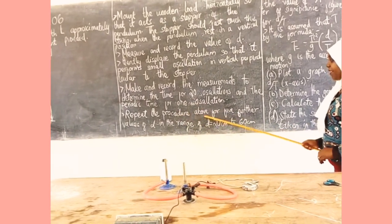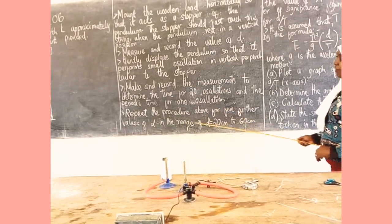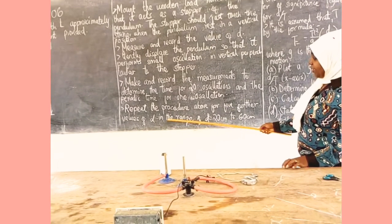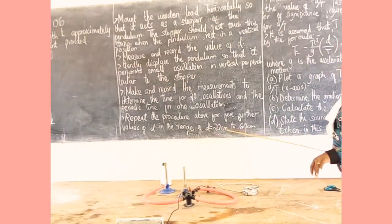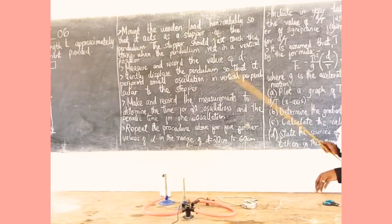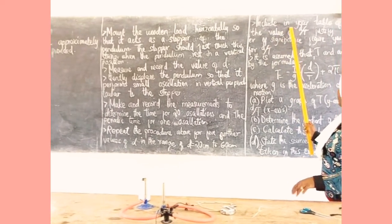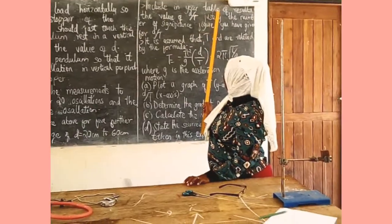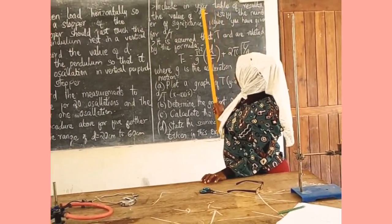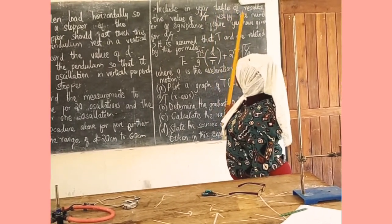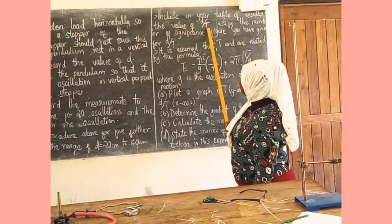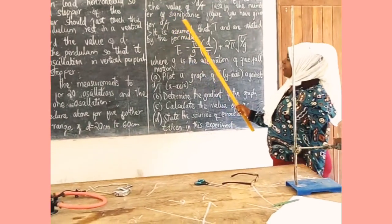Repeat the procedure above for 5 further values of D in the range of 20 to 60 cm, including in your table of results the value of D over T. Justify the number of significant figures you have given for D over T.